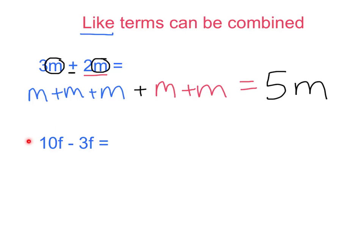In my second example right here of 10f minus 3f, I can combine these because both of them have a common variable or a like term of a variable f. And if I don't want to have to write out all of the variables like I did above, all I need to do is just find my two coefficients and I just need to take whatever my coefficients are and whatever operation is given and I just need to combine those two coefficients.